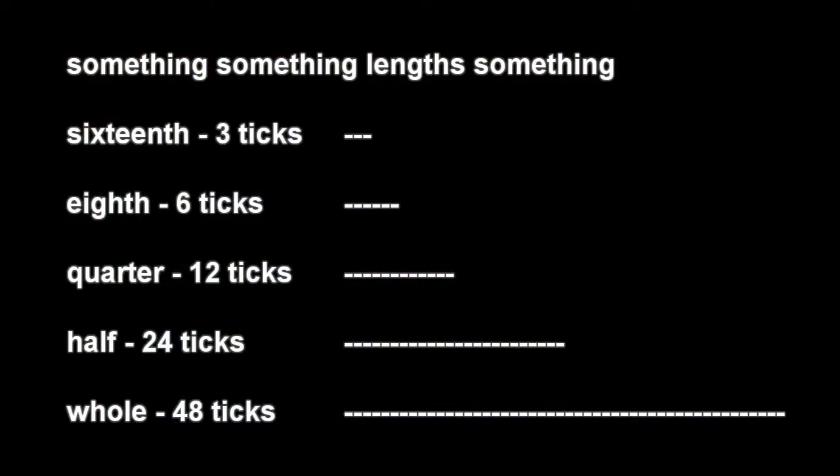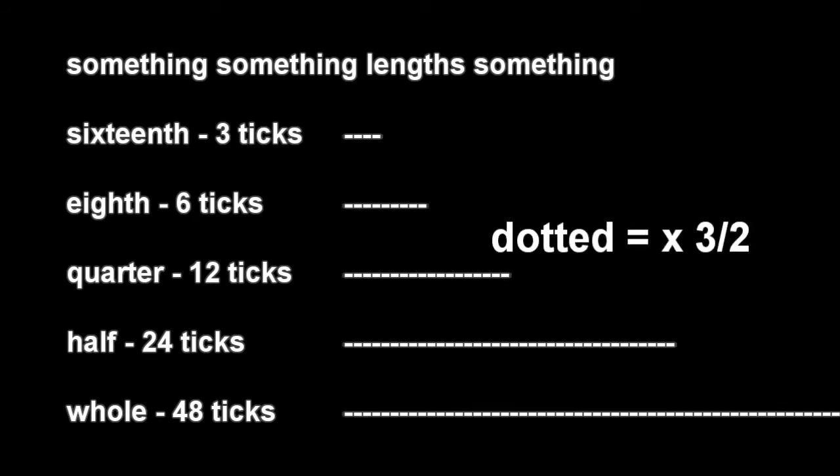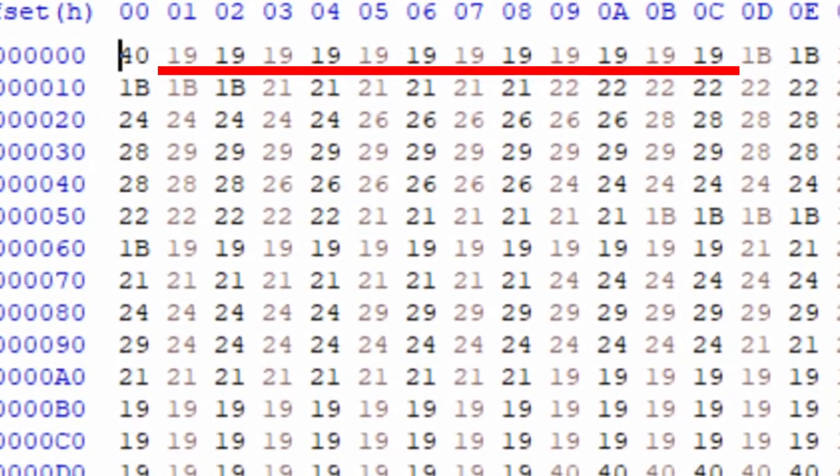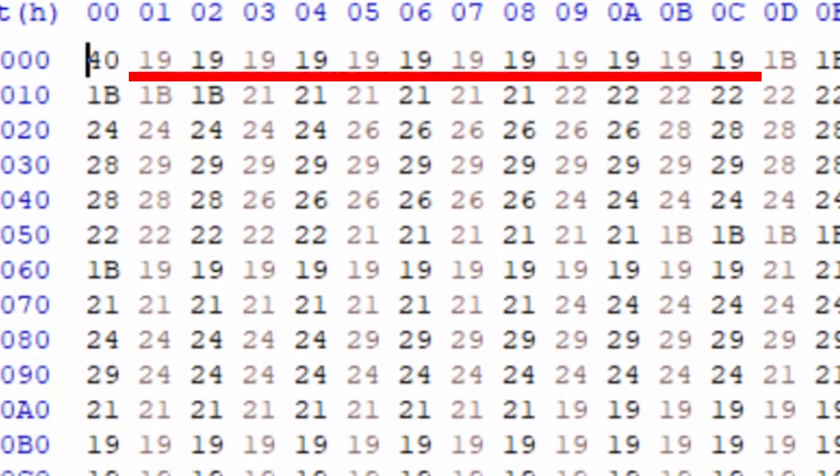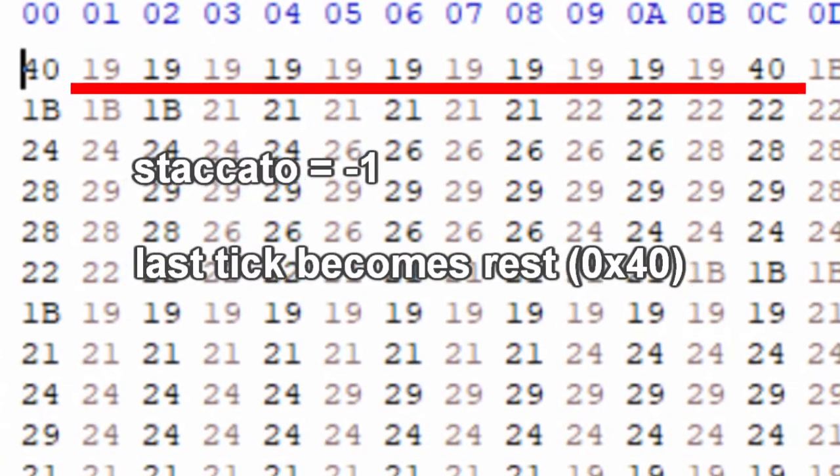From there, these lengths can have modifiers. Triplet multiplies the length by two-thirds, and dotted multiplies by three-halves. The final length is how many addresses the note is repeated for in the EEPROM, but the staccato modifier can change the last tick into a rest to make a gap between two adjacent notes.